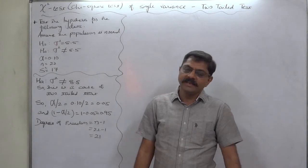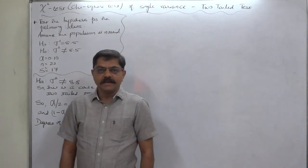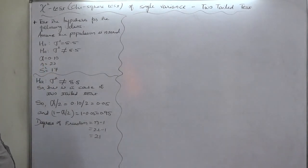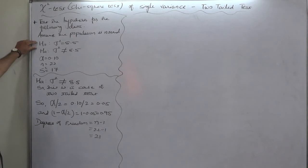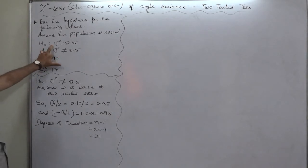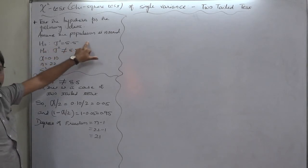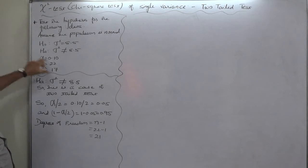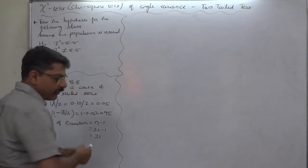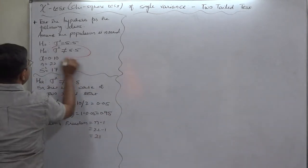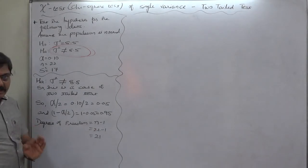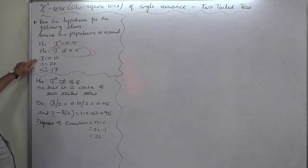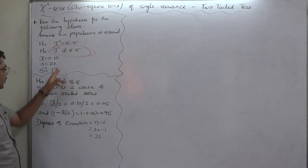Hello, namaskar and welcome. One more case in chi-square test, and this time we are with a two-tailed test. The case is: test the hypothesis for the following data, assume the population is normal. Null hypothesis H₀: population variance σ² = 8.5. Alternative hypothesis: population variance ≠ 8.5. Alpha = 0.1, that means level of significance is 10%, sample size n = 22, and sample variance s² = 70.